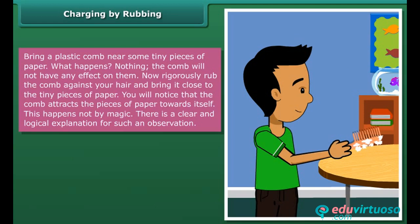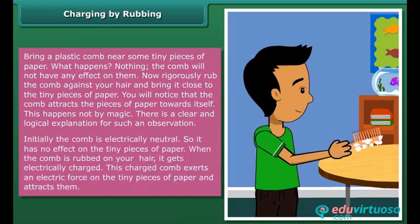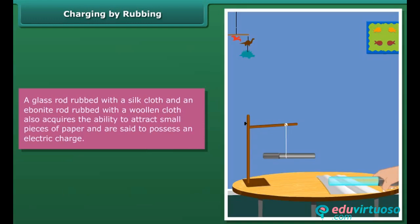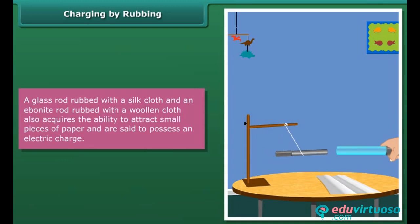This happens not by magic — there is a clear and logical explanation. Initially, the comb is electrically neutral, so it has no effect on the tiny pieces of paper. When the comb is rubbed on your hair, it gets electrically charged. This charged comb exerts an electric force on the tiny pieces of paper and attracts them. A glass rod rubbed with a silk cloth and an ebonite rod rubbed with a woolen cloth also acquire the ability to attract small pieces of paper and are said to possess an electric charge.